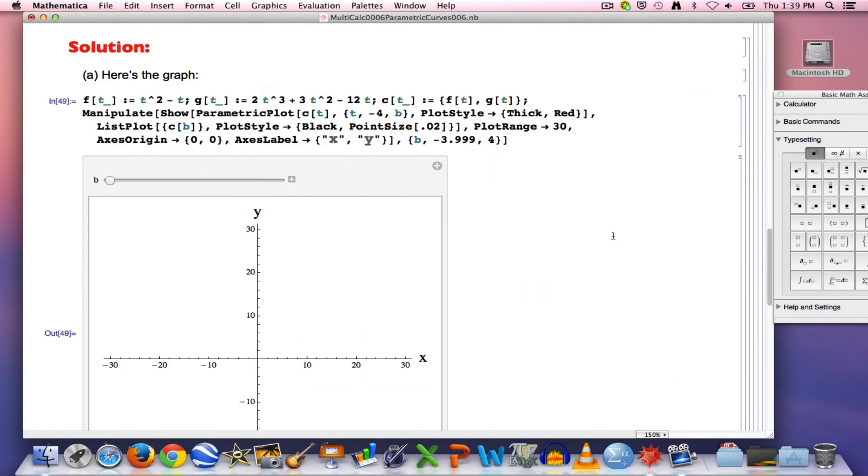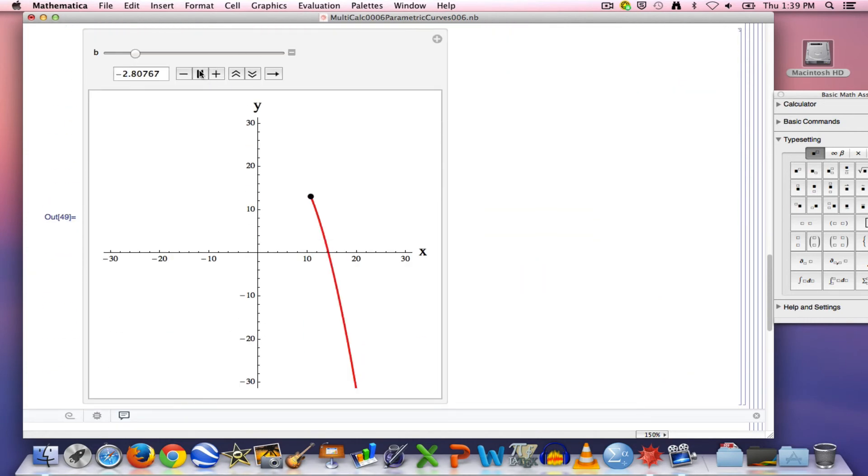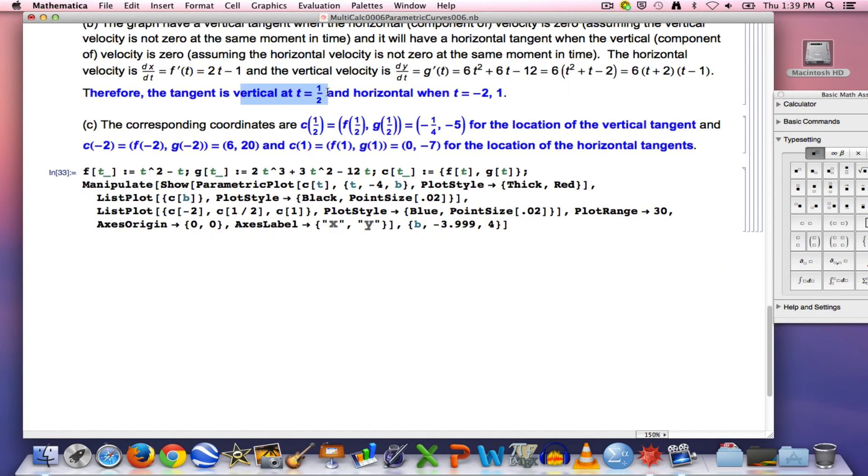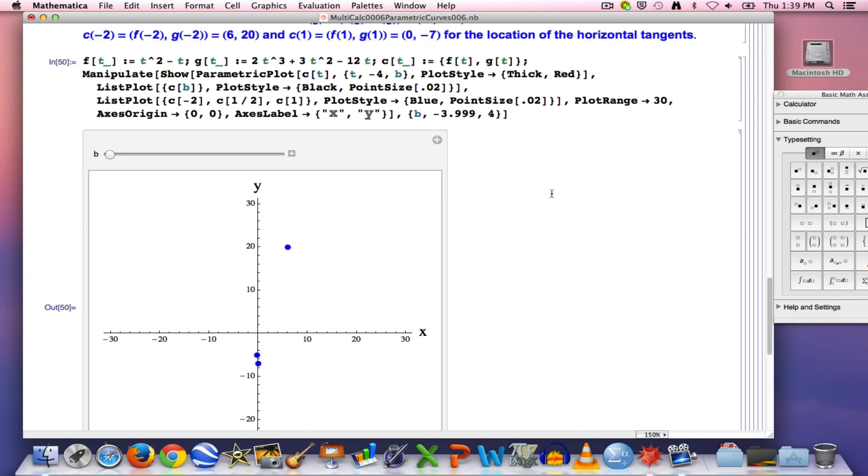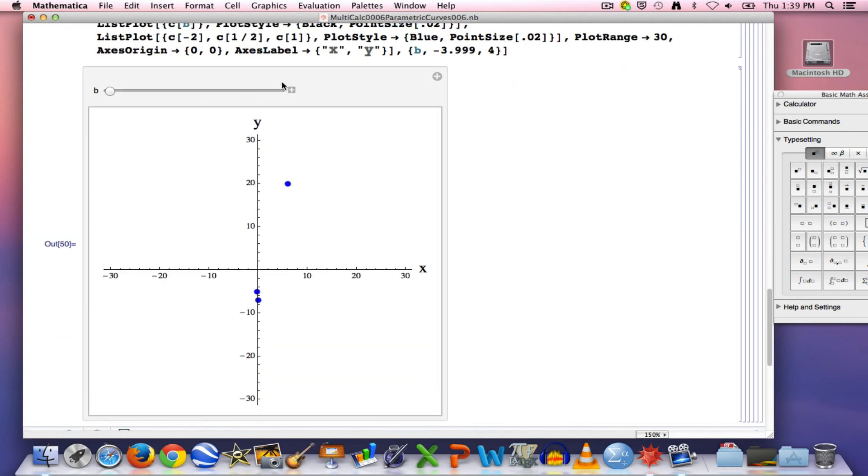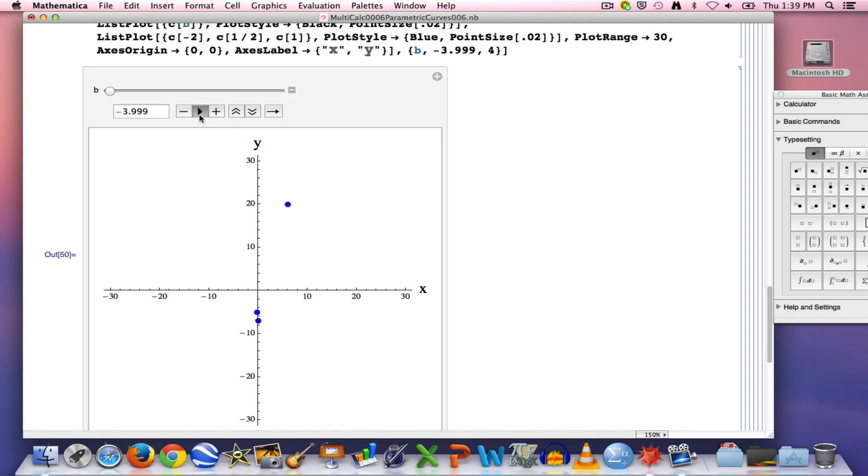Here's the graph. You can use this parametric mode on your calculator to make this graph. This is kind of a pretty graph as well. There it is. It turns out the tangent line is vertical at t equals one half and horizontal when t is negative two and one. You can use derivatives to figure that out, like you see here. The corresponding x, y coordinates are given by these things right here. And I also made an animation where I put those points in the picture, those blue dots that you see there. So we see the motion, there's a horizontal, then vertical, then horizontal tangent. I'll let you look at that again, and then I'll end the video.